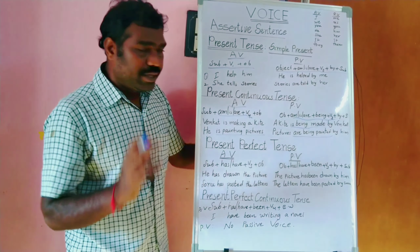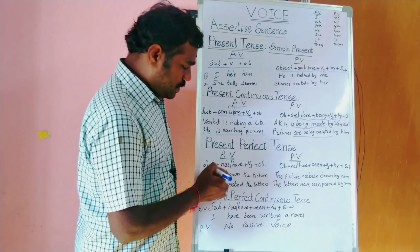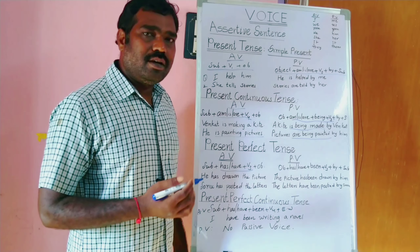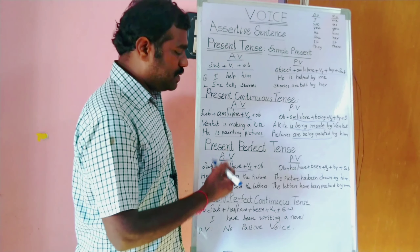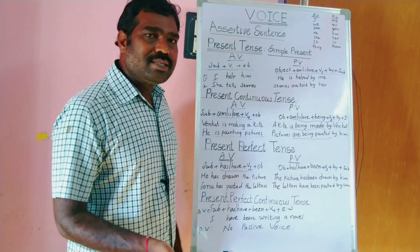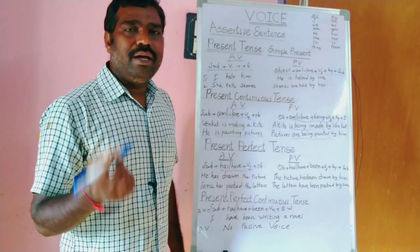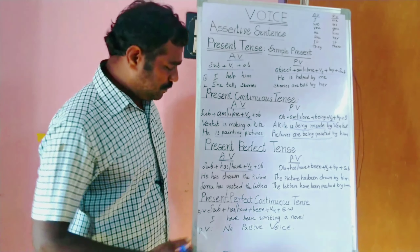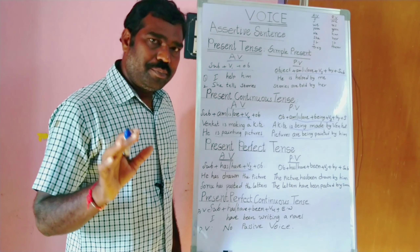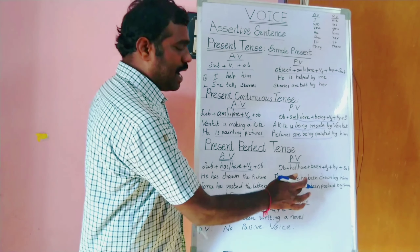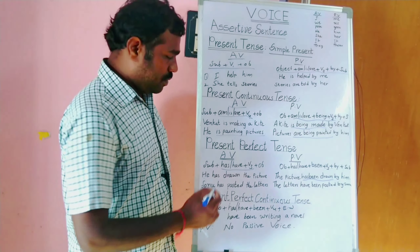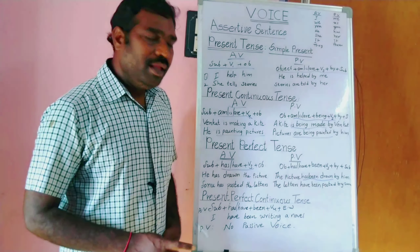Then present perfect tense. In active voice, the structure is: subject + has/have + V3 + object. In passive voice: object + has/have + been + V3 + by + subject. For example: 'He has drawn the picture' becomes 'The picture has been drawn by him.'